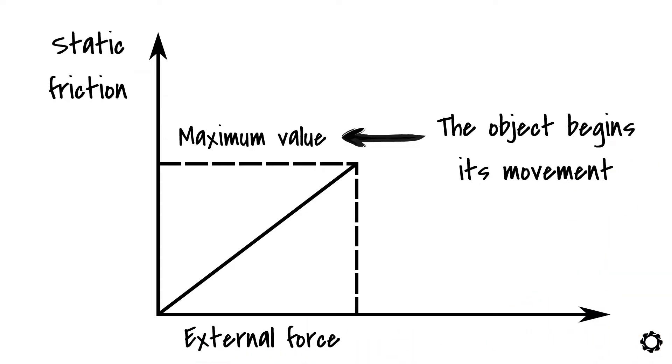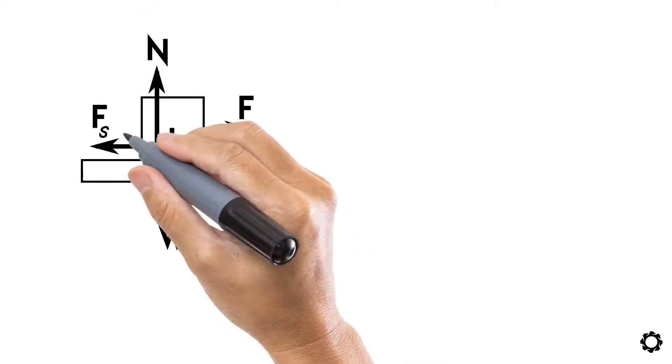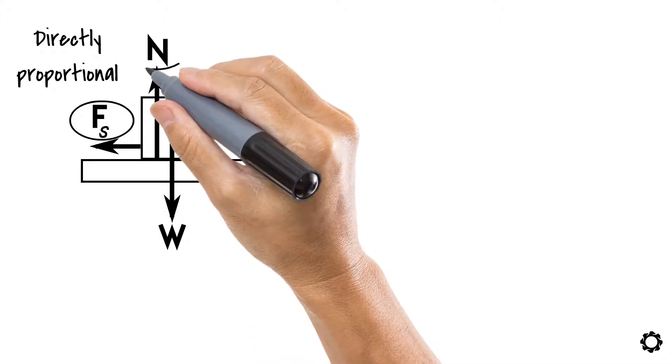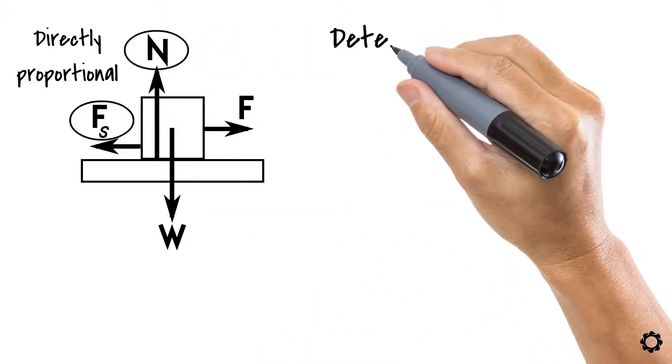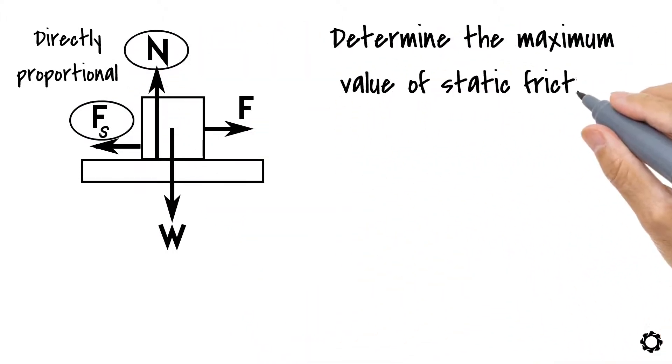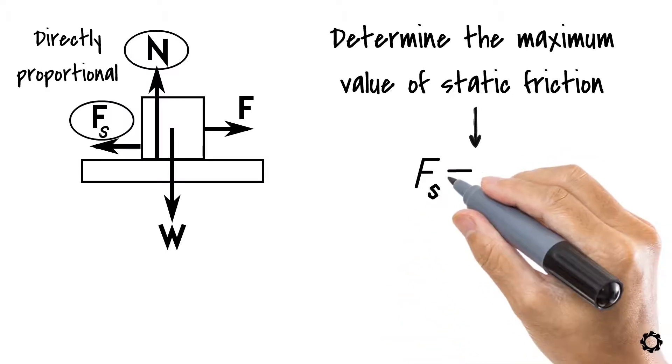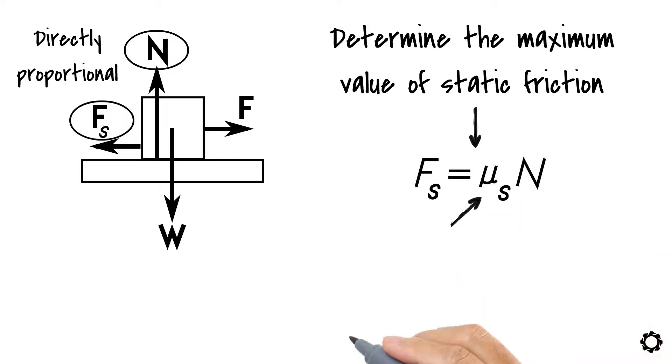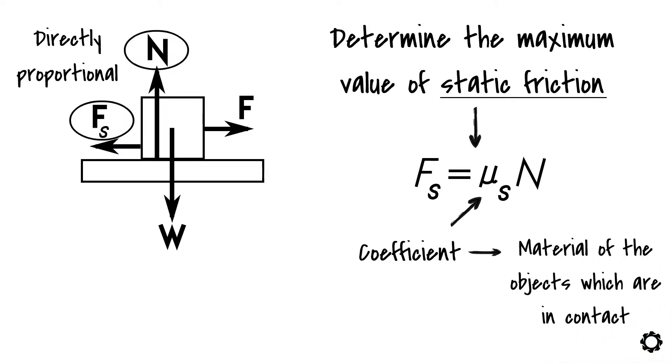By knowing from experiments that the static frictional force, Fs, is directly proportional to the resultant normal force, N, we can then determine the maximum value of static friction by using the following equation. Fs equals mu s times N, where mu s is the coefficient of static friction which is dependent on the material of the objects which are in contact with each other.